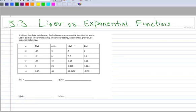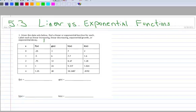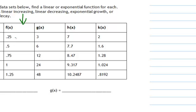So let's first start with f of x. So we're going to look at this data set right here. And when I look at the data set, let's just examine it and see if we can see a pattern. Well, when I go from 0.25 to 0.5, I'm increasing. And then when I go from 0.5 to 0.75, I'm increasing.